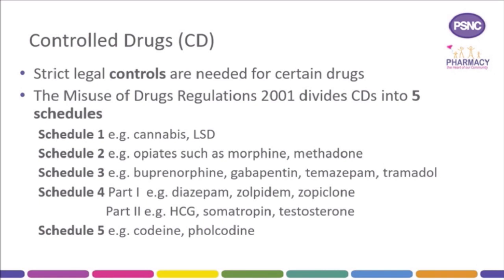In the Misuse of Drugs 2001 Regulations, drugs are divided into five schedules, each specifying the requirements governing such activities as import, export, production, supply, possession, prescribing and record keeping which apply to them. As you can see there are some examples of drugs in each schedule shown. Just to point out, Schedule 4 is split into two parts.